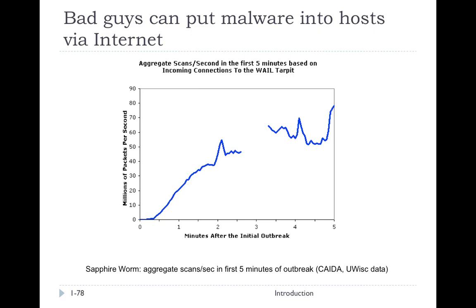This graph from the author shows an old worm outbreak — the Sapphire worm — and how quickly it sent a lot of packets. You can see just minutes after the initial outbreak how many millions of packets per second were being sent out by this worm. Because worms and viruses are self-replicating, they can cause an exponential explosion in network traffic if that's what they attack.